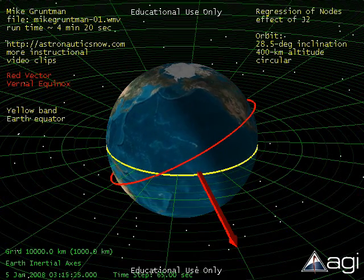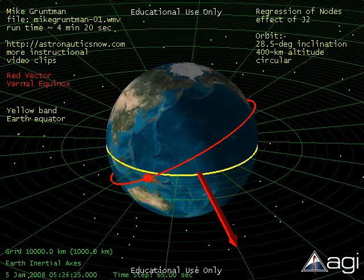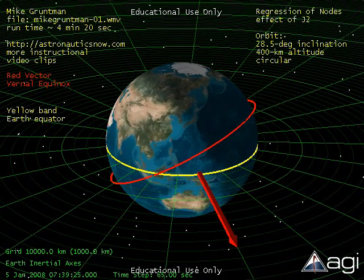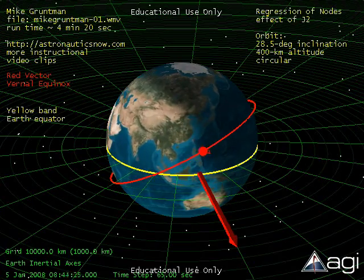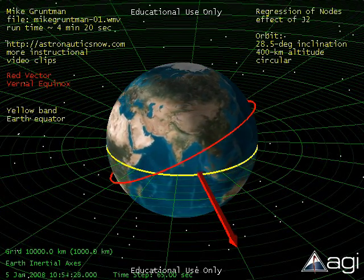To achieve such precession, inclination of the orbit must be larger than 90 degrees. As observed from the north, the satellite would orbit the Earth in the clockwise direction opposite to the direction of the Earth rotation. Such orbits are called retrograde.